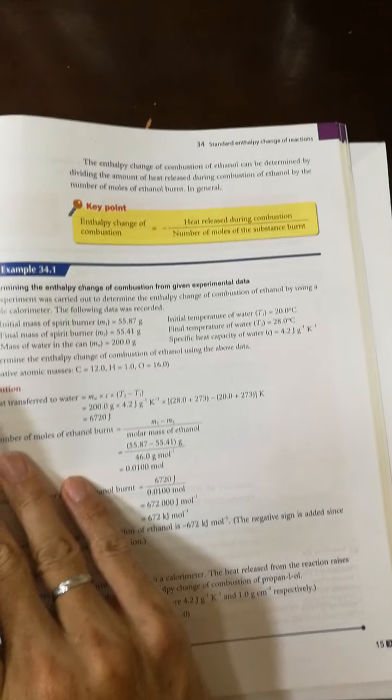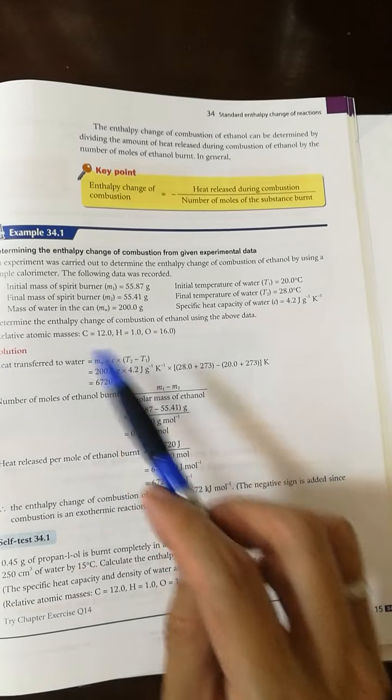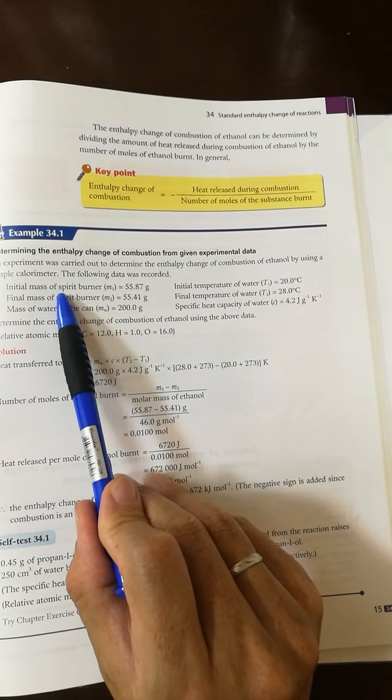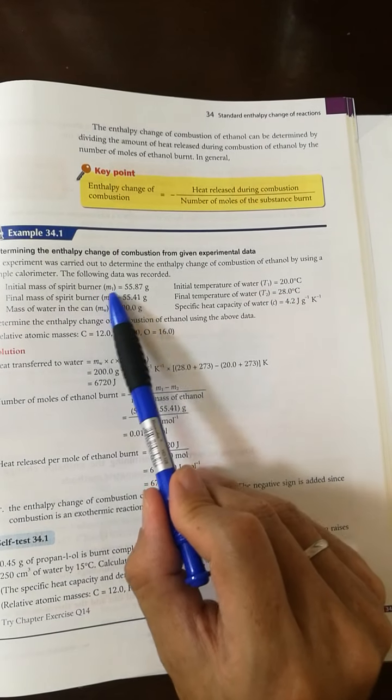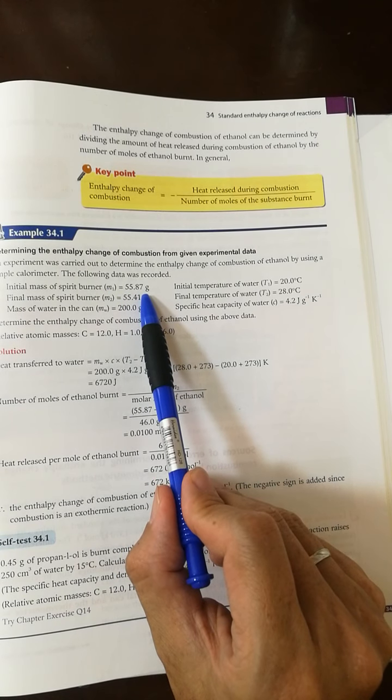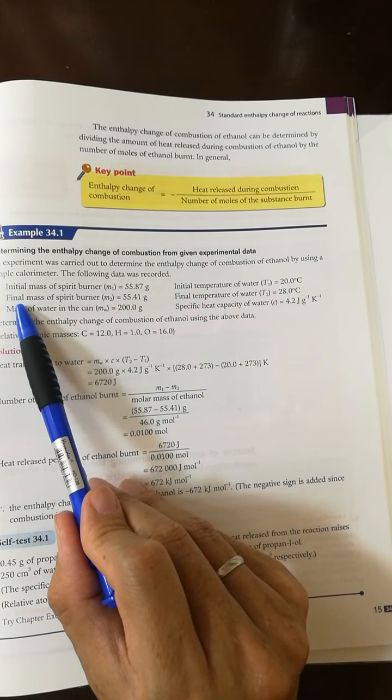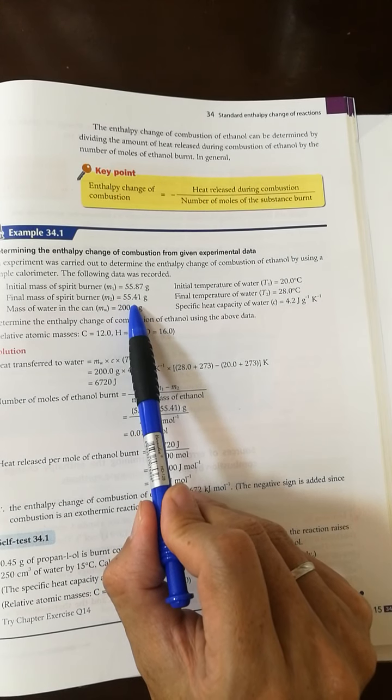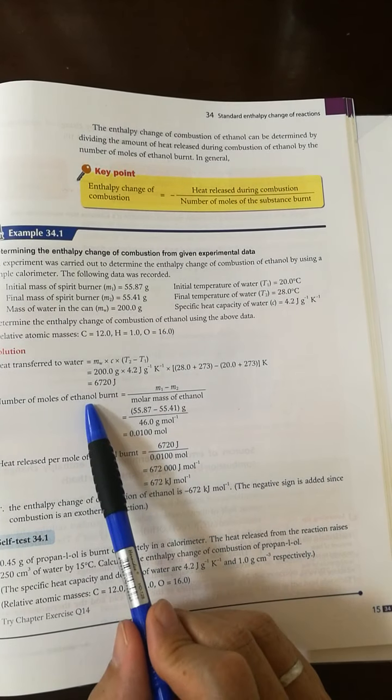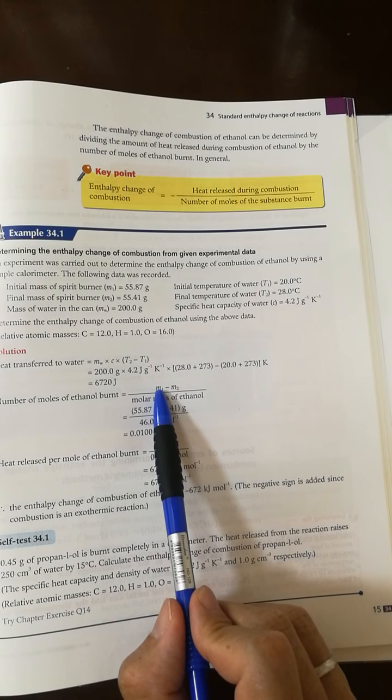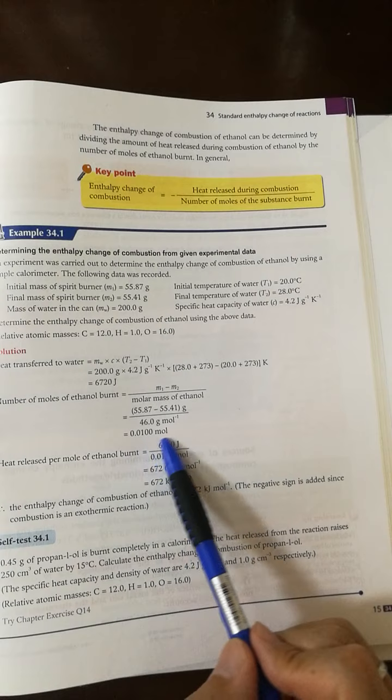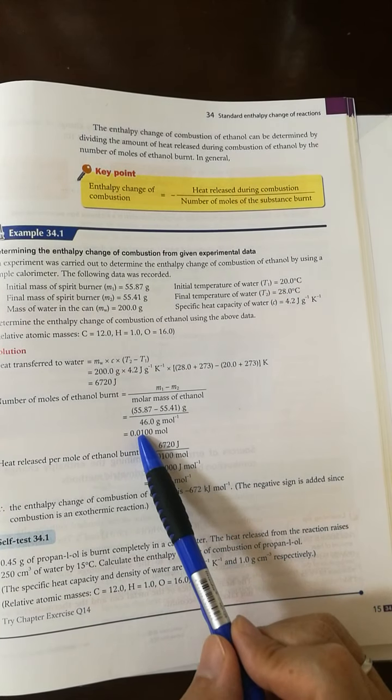So how is the data used to find the delta H? We have at the bottom a spirit burner containing ethanol. Before it burns, it has a mass of 55.87 grams, and after it burns the final mass decreased to 55.41 grams. That means the difference is equal to the mass of ethanol combusted. And over the molar mass of ethanol, that is 46, you can get the number of moles of ethanol burned in this experiment.